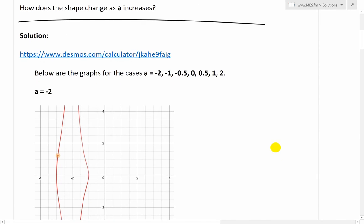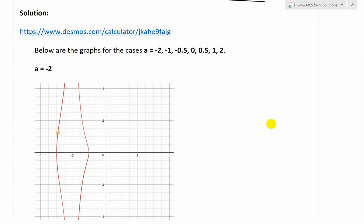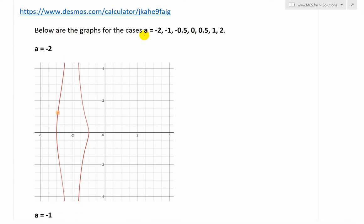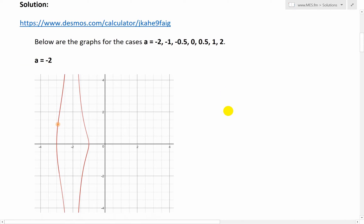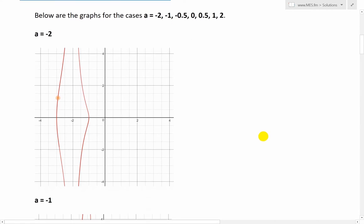So anyways, from that, I've copied and pasted several graphs, or several graphs with different values of a. Below are the graphs for the cases where a equals negative 2, negative 1, negative 0.5, 0, 0.5, 1, and 2.